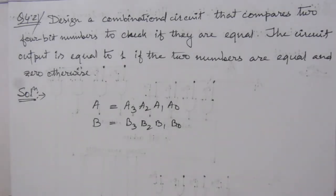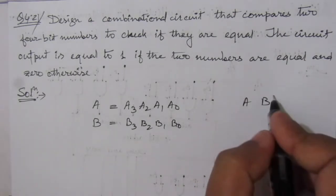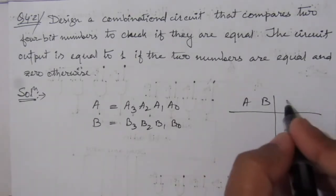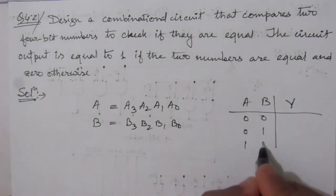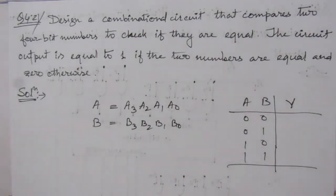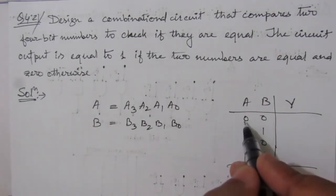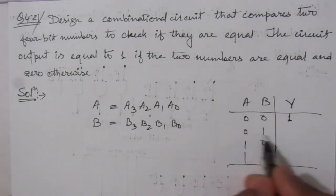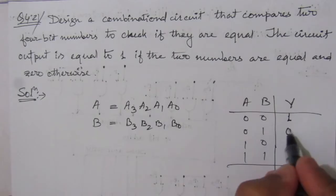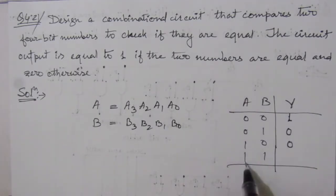So for designing this circuit, we have to see which gate gives value 1 whenever two inputs are equal. Suppose A, B. Let us write down the desired output. It is 0, 0, then 0, 1, then 1, 0, then 1, 1. These are the four possible combinations. Whenever these two bits are equal, we have to get output equal to 1. Whenever not equal, we get 0. And 1 and 1, they are equal, so we get 1.